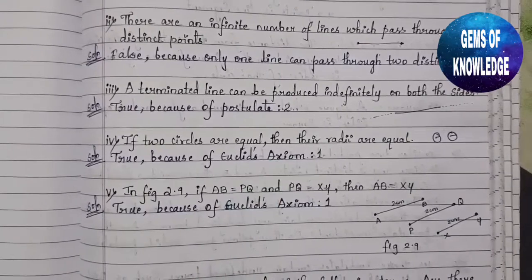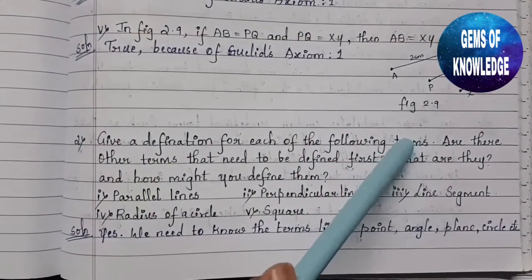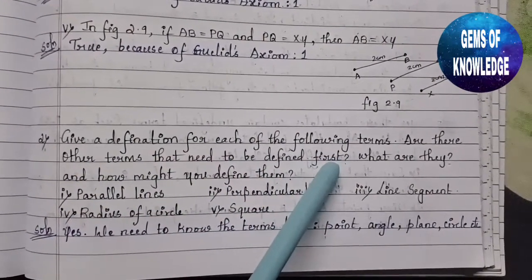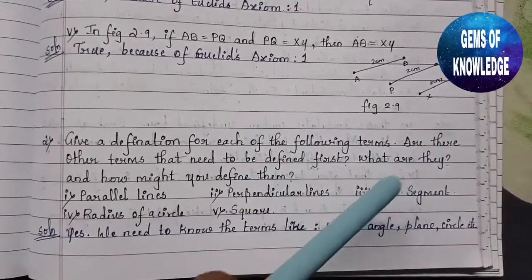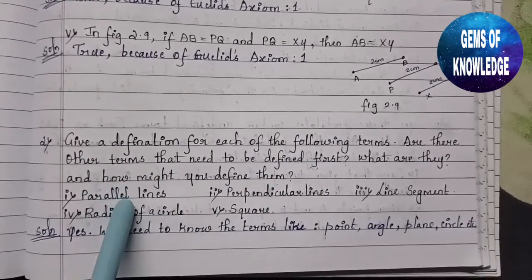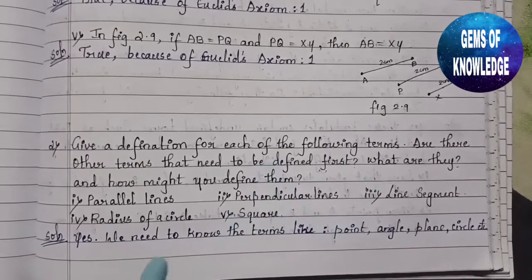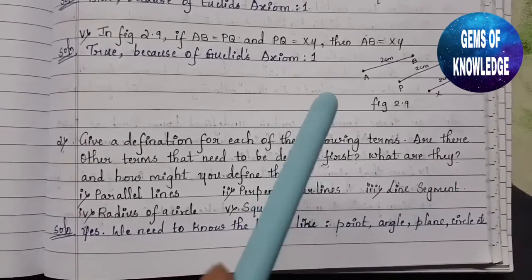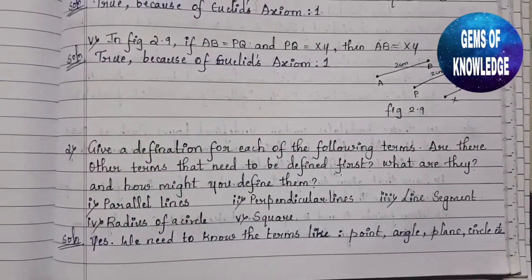The next question asks: give a definition for each of the following terms, and are there other terms that need to be defined first? Yes — to define parallel lines, perpendicular lines, line segment, radius of a circle, and square, we first need to know terms like point, angle, plane, circle, quadrilateral, and sides.